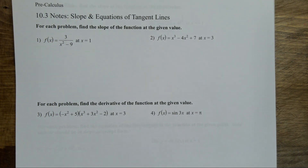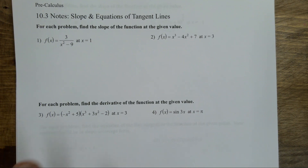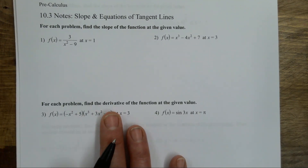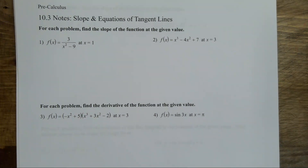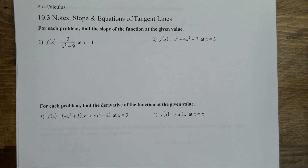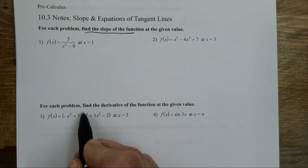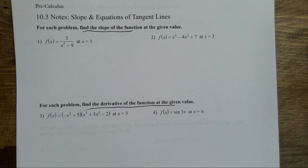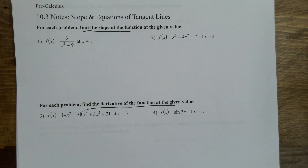One thing I want you to pay attention to is the directions, because the directions are going to look different but essentially mean the same thing: find the slope of the function at the given value, find the derivative of the function at the given value. There's actually another thing we call it — the instantaneous rate of change. It means find the derivative, plug in x, and figure out what it equals.